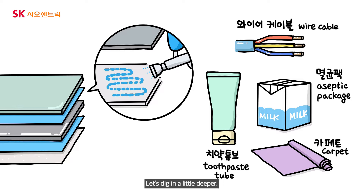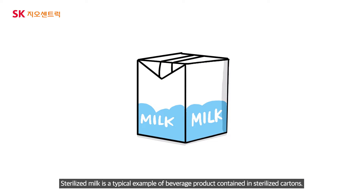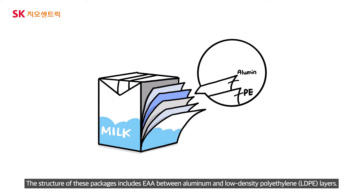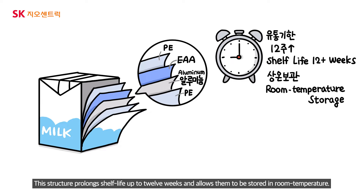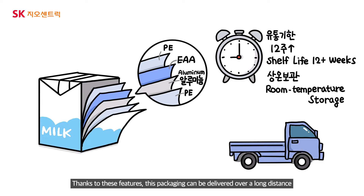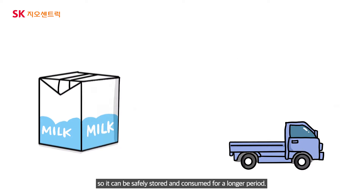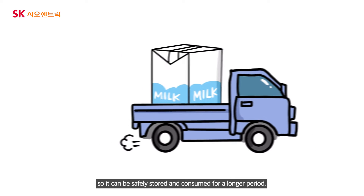Let's dig in a little deeper. Sterilized milk is a typical example of a beverage product contained in sterilized cartons. The structure of these packages includes EAA between aluminum and low-density polyethylene layers. This structure prolongs shelf life up to 12 weeks and allows them to be stored at room temperature. Thanks to these features, this packaging can be delivered over a long distance and safely stored and consumed for a longer period.